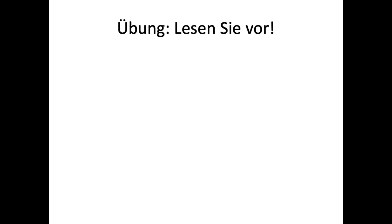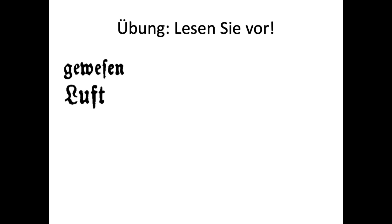Now let's practice reading. I'll show you a word, give you a moment to pronounce it, then I'll say it. First: 'gewesen' — G, E, W, E, S, E, N — past participle of 'sein' (to be). Tricky S there. Next: 'Luft' — L, U, F, T — meaning air. Note that if we had an S instead of the F here, that would be 'Lust,' which is also a word — but this one is 'Luft,' air.